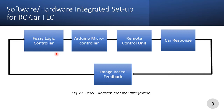This timed output is fed to Arduino Uno, which generates a digital signal of the specified duration and feeds it to the specific controls of the remote control. The remote control finally transmits this signal to the car, which covers distance in the respective direction accordingly.